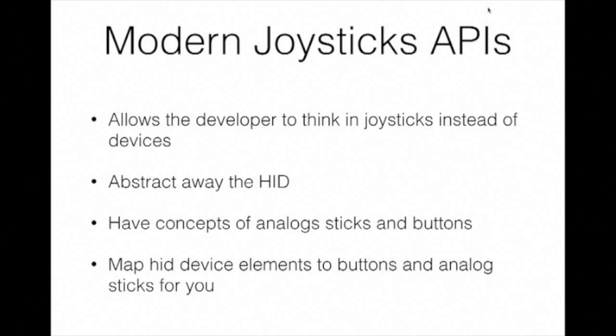You can talk in terms of buttons, joysticks, and analog sticks — like in DirectInput, where you'd say 'I want to know what the X-axis is doing right now,' not 'what is device 35 doing.' These APIs also help with mapping. If you're just looking at raw HID, you may not know that a particular input is the X button — it likely comes back as 'button-something.' Modern joystick APIs like DirectInput solve that problem by mapping buttons for you.